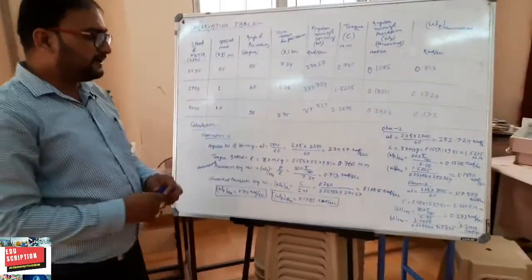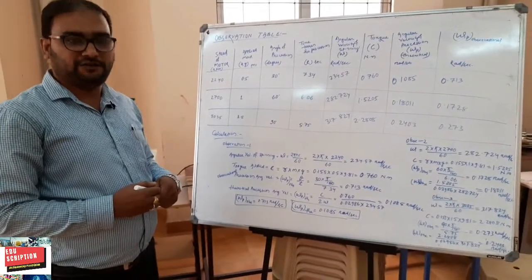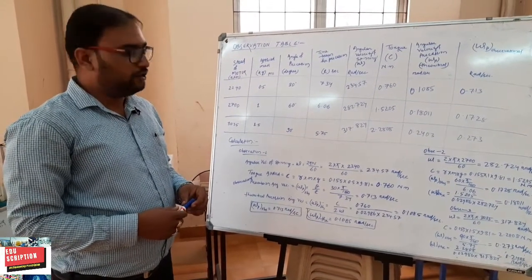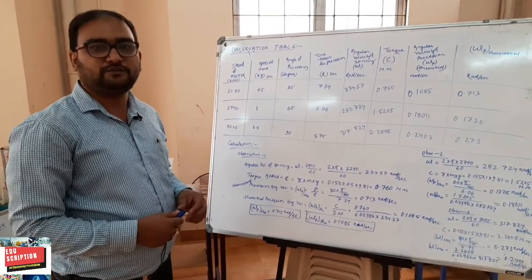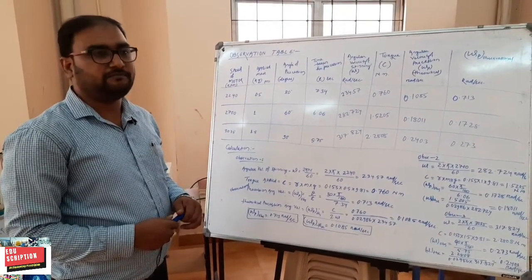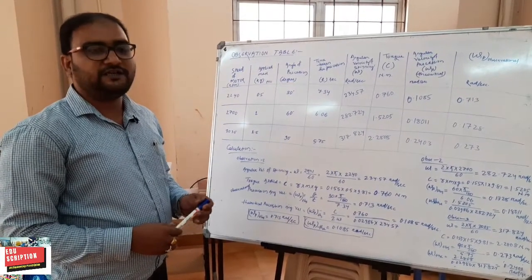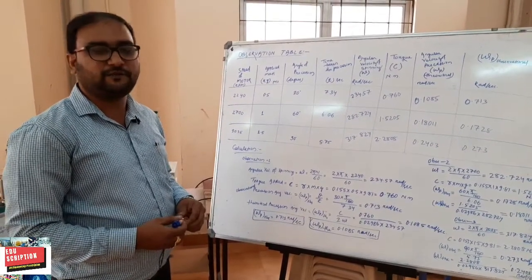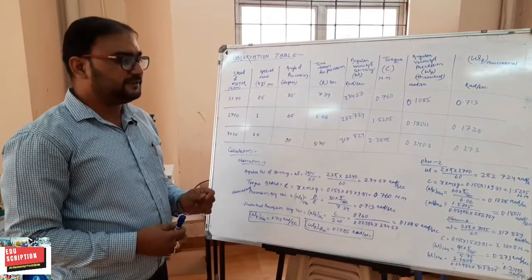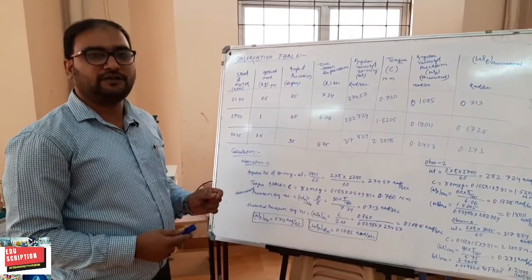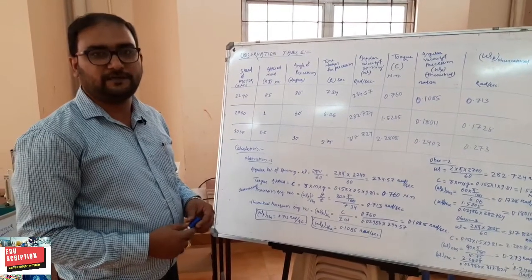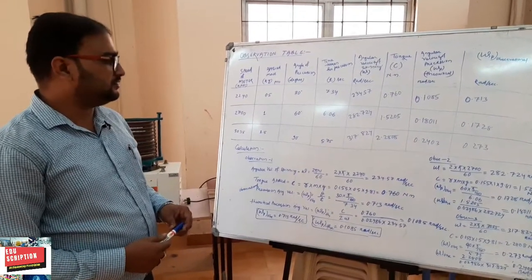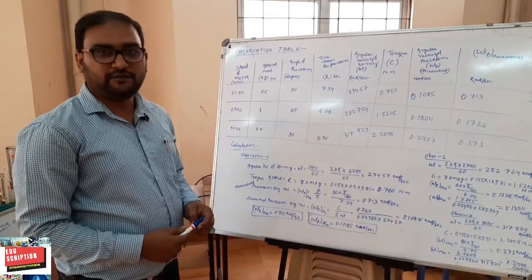We have compared the omega-p observational and omega-p theoretical values to verify the gyroscopic couple relation. The conclusion is that, considering machine error, for different conditions of speed as well as dead weight, the precession angular velocity satisfies the gyroscopic couple relation. Thank you very much.